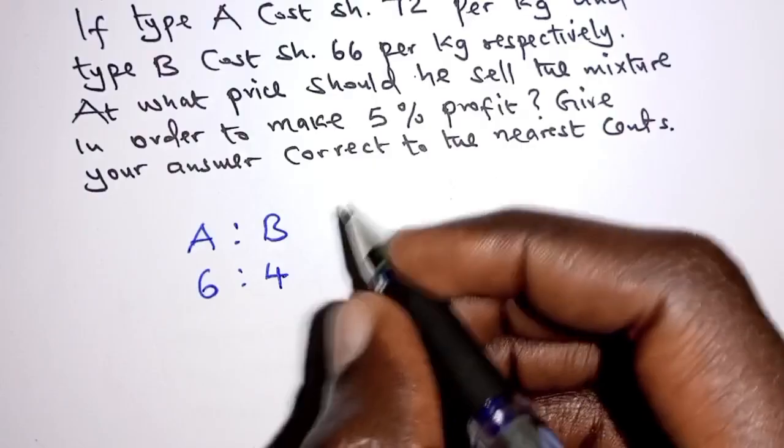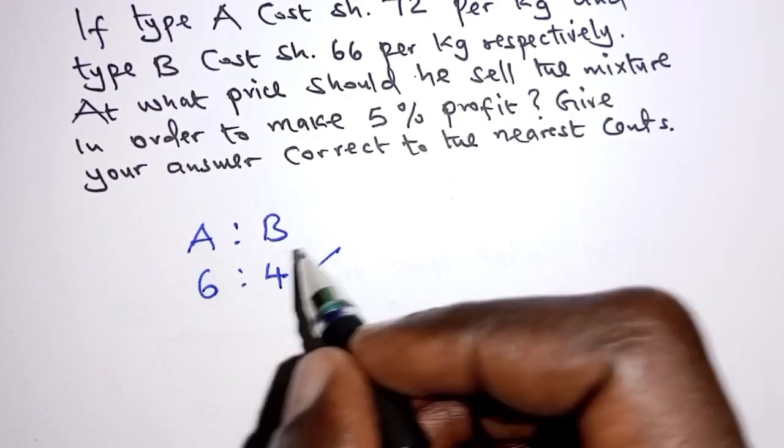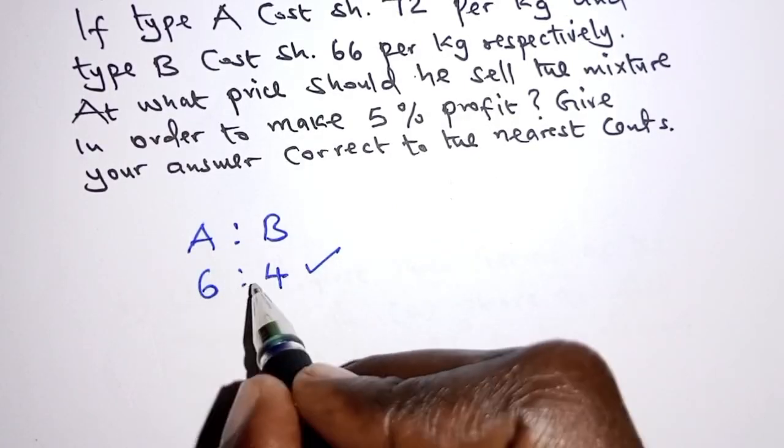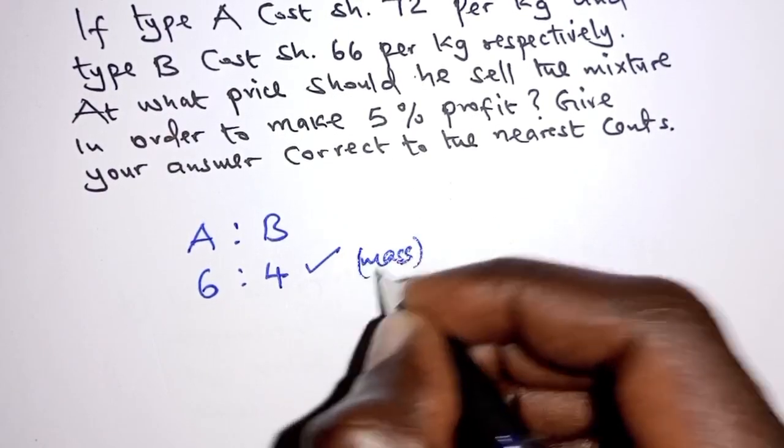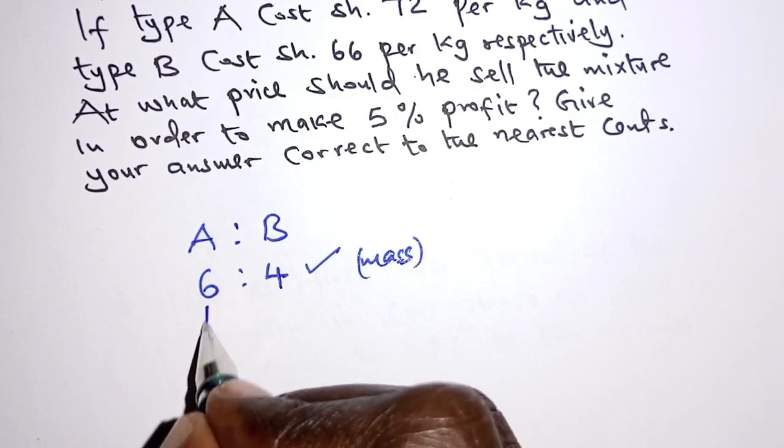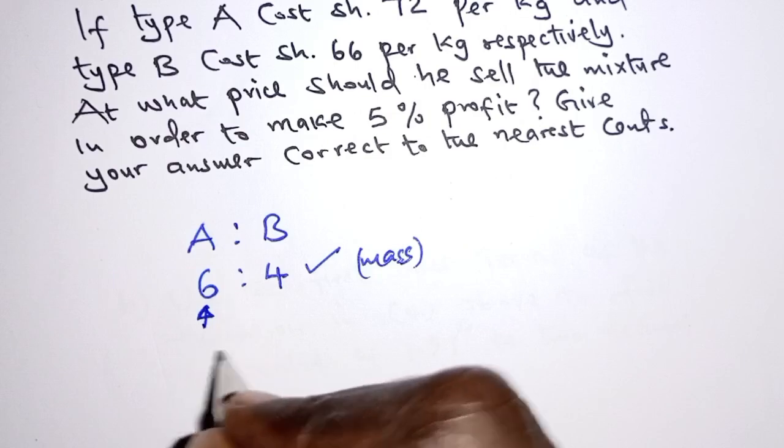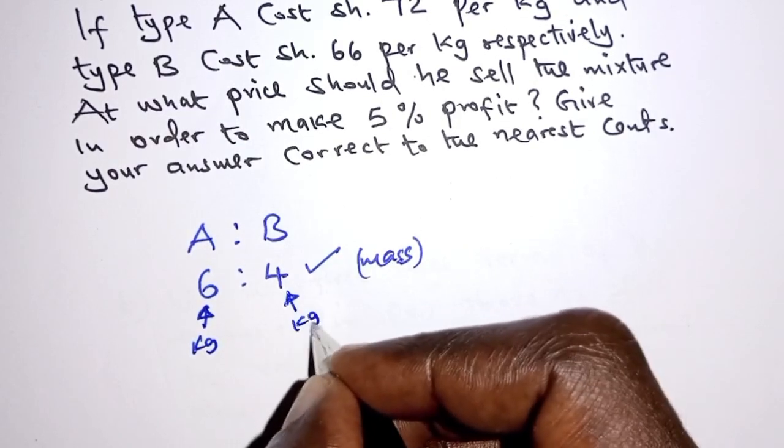We can also agree that the ratio in which the two types were mixed should represent the masses. For type A, you can consider that six represents six kilograms, and this one also represents four kilograms.